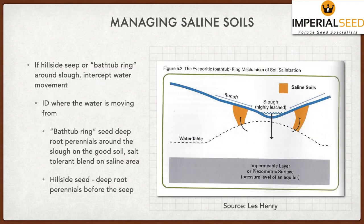Regarding hillside seeps or the bathtub ring around sloughs, we need to identify where the water source is coming from. In the illustrations on the right, Dr. Henry talks about the bathtub ring effect. In this case, we have a slough that accumulates runoff water. The water slowly infiltrates into the soil, then starts pushing out east and west instead of up and down. When it moves out and starts coming back up through capillary action and reaches the surface, it evaporates, and now we have a salt issue.